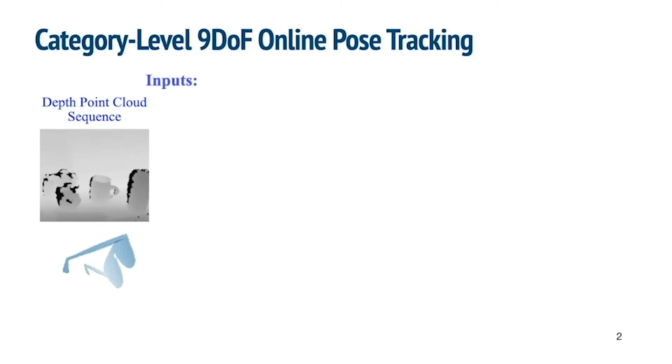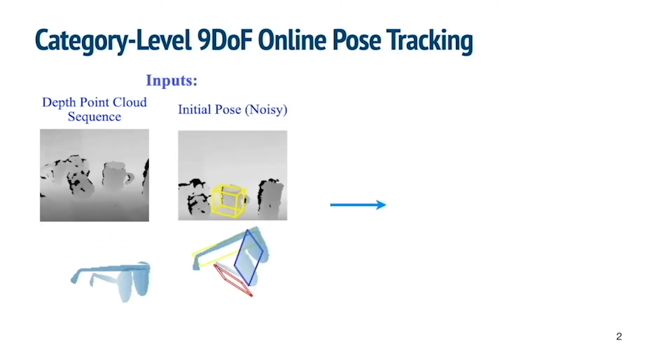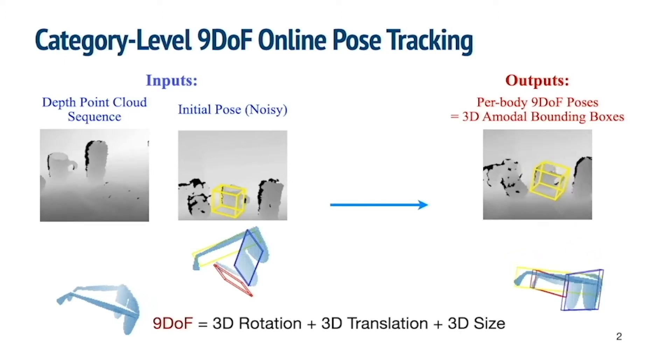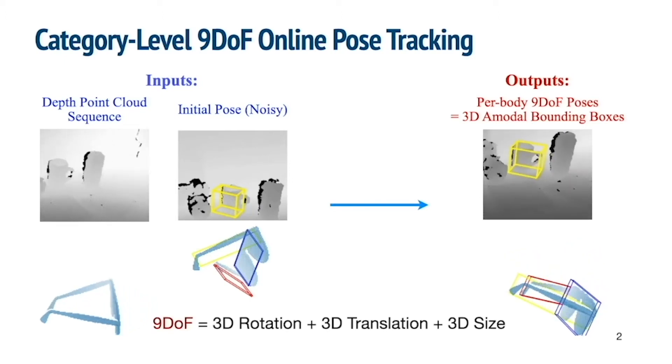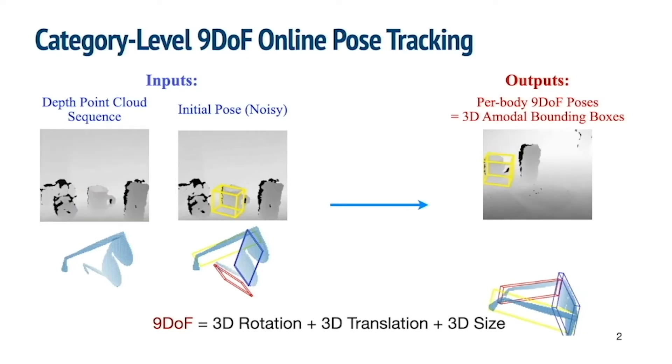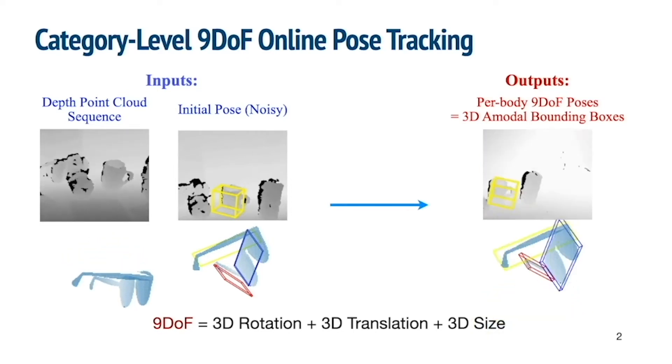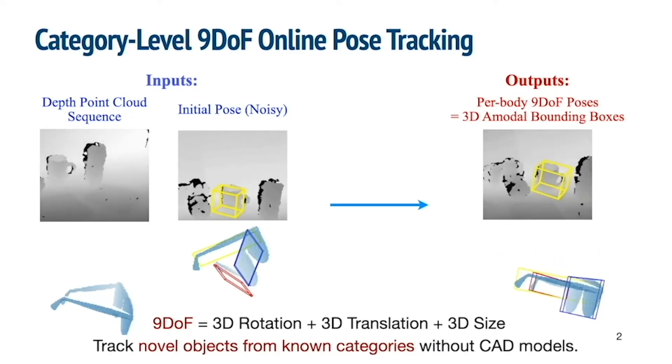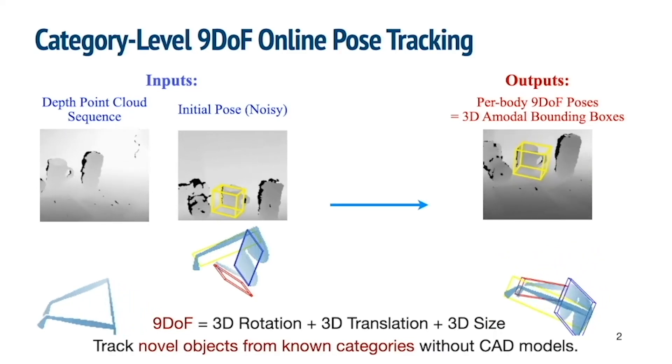Given a point cloud sequence and a noisy initial pose, the goal is to track the per body 9 degrees of freedom poses, namely 3D rotation, 3D translation, and 3D sizes, which can be represented and visualized as 3D model bounding boxes. Our method is designed to handle novel instances from known categories without CAD models.